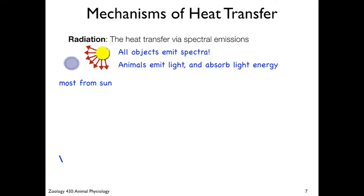The next mode of heat transfer is radiation. Something that's really kind of interesting is that all bodies emit spectral emissions. Isn't that cool? What that means is everything emits some sort of radiation. Everything. Animals emit light, plants emit light, the sun emits light. It's related to the surface temperature.